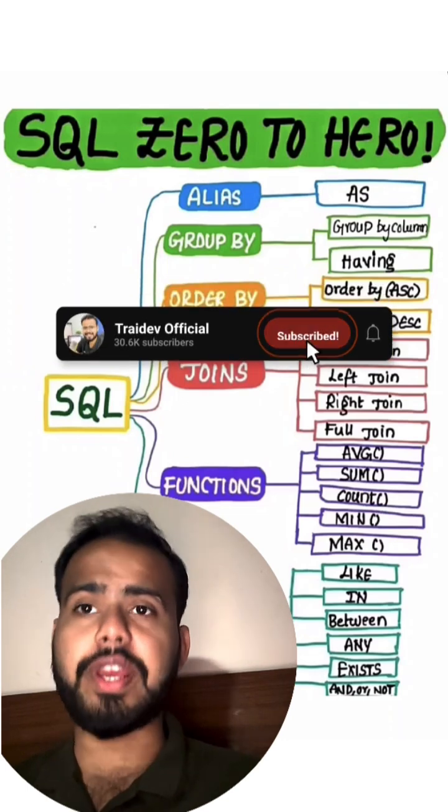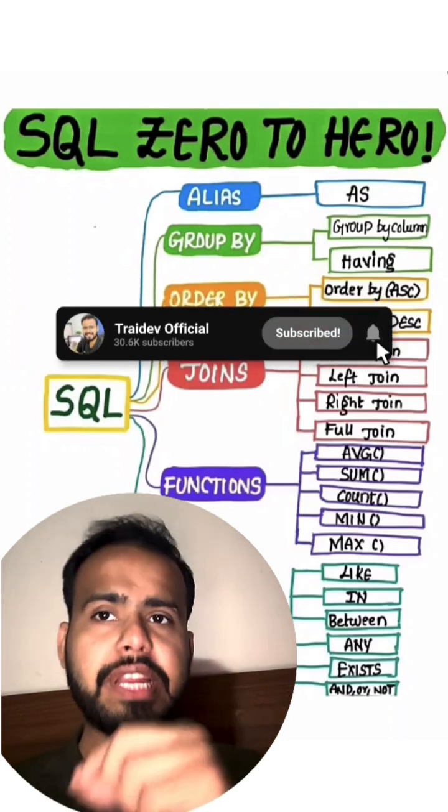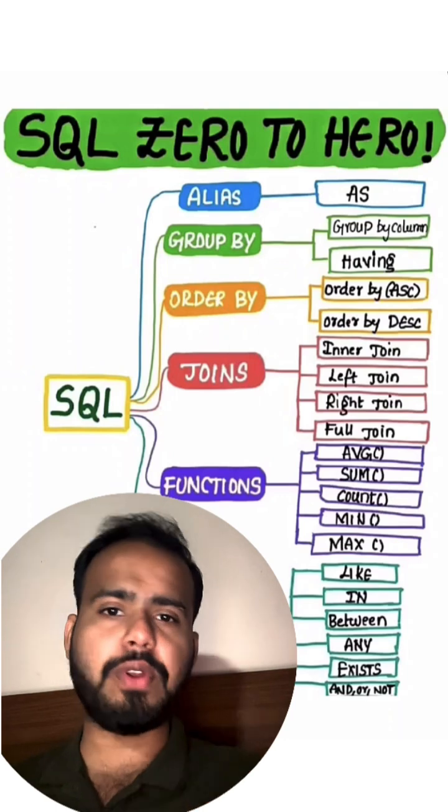But we can discuss, there is ALIAS. ALIAS is just about renaming the column which you are fetching from the table.